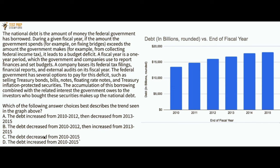Now we have the same passage and same graph, but a different question: Which of the following best describes the trends seen in the graph? A: Debt increased from 2010 to 2012, then decreased from 2013 to 2015. B: Debt decreased from 2010 to 2012, then increased from 2013 to 2015. C: Debt decreased from 2010 to 2015. Or D: Debt increased from 2010 to 2015. Pause the video to try it — it doesn't matter if you get it right or wrong, we're just practicing.